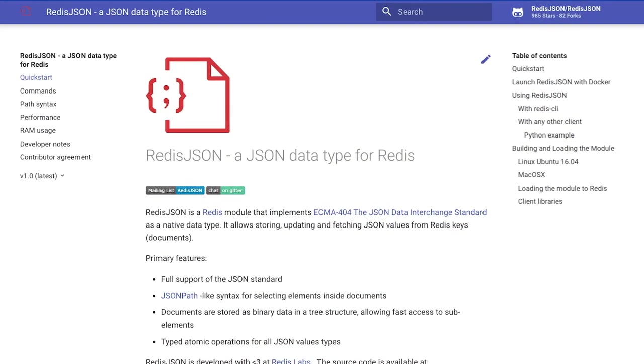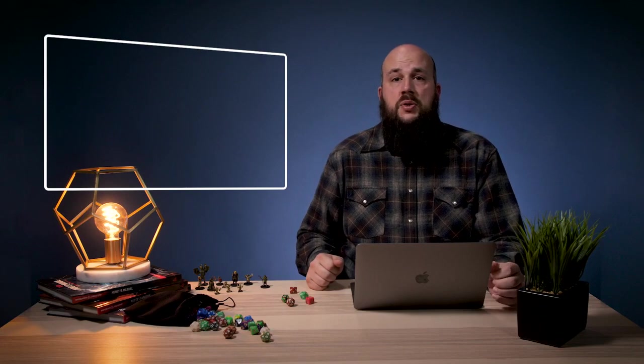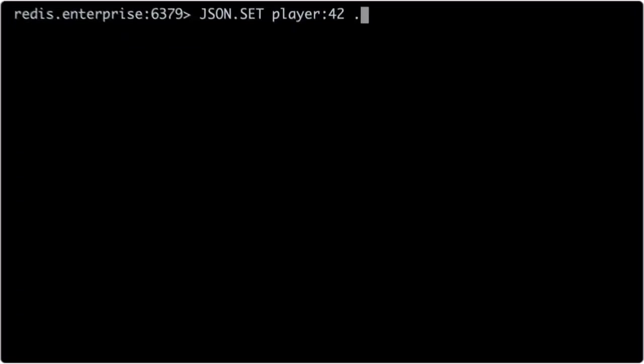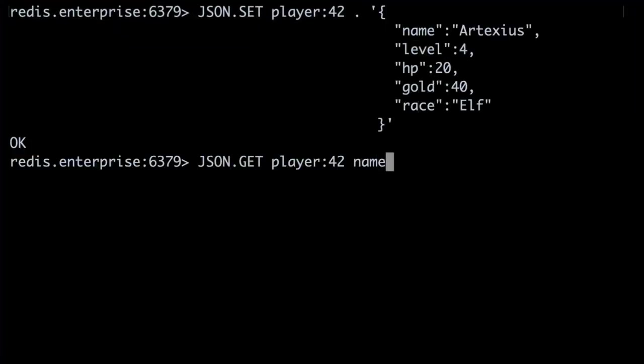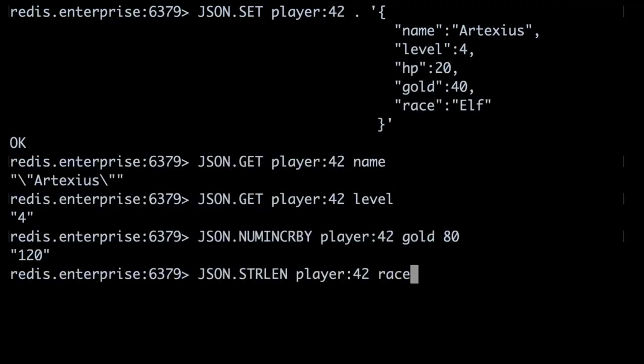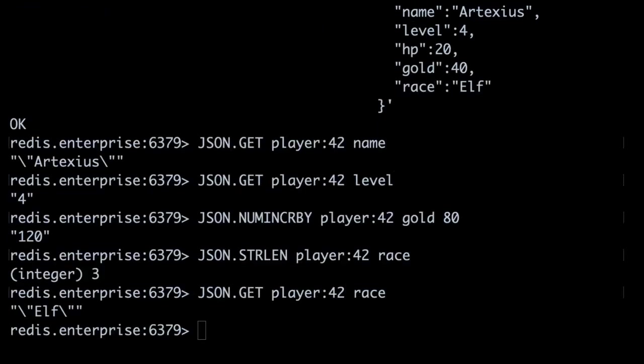As useful as hashes are, they aren't the be-all and end-all for object storage in Redis. If you're dealing with nested structures or JSON, check out Redis JSON. Redis JSON is a Redis module that implements the JSON data interchange standard as a native data type. It implements efficient storage, update, and retrieval of JSON data in Redis.